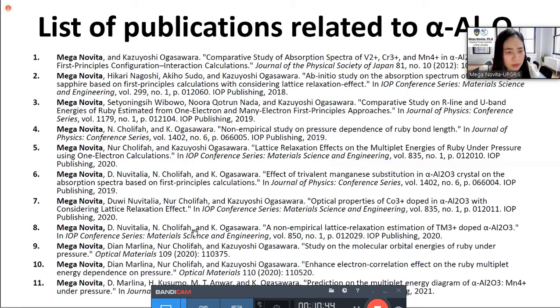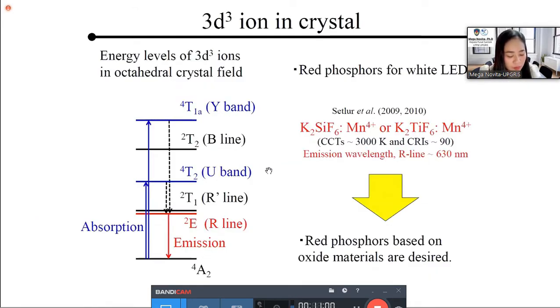Here is my list of publications related to alpha alumina. So, if you are interested, you can download it and read it later. All of them are about alpha alumina. In the case of 3d3 ions doped in crystal, the energy levels in octahedral crystal field are shown here. There are some doublet states and quartet states. Quartet A2 is the ground state. The transition from ground state to quartet T2 and quartet T1 are responsible for the absorption process.